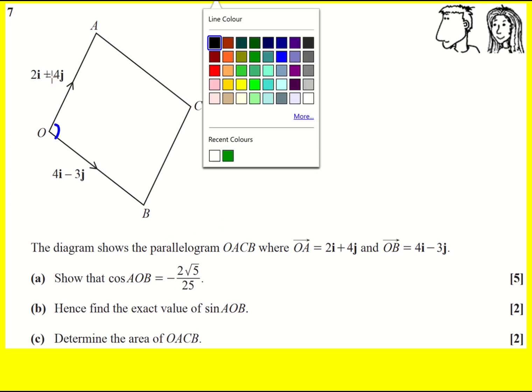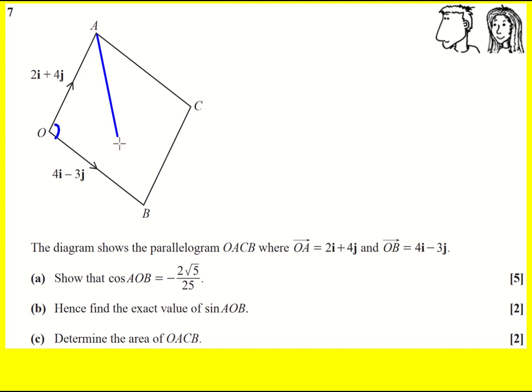So what jumps to mind for me, because we can work out these sides, is to turn this into a non-right-angled triangle, so this one on the left, and then we're going to use the cosine rule.